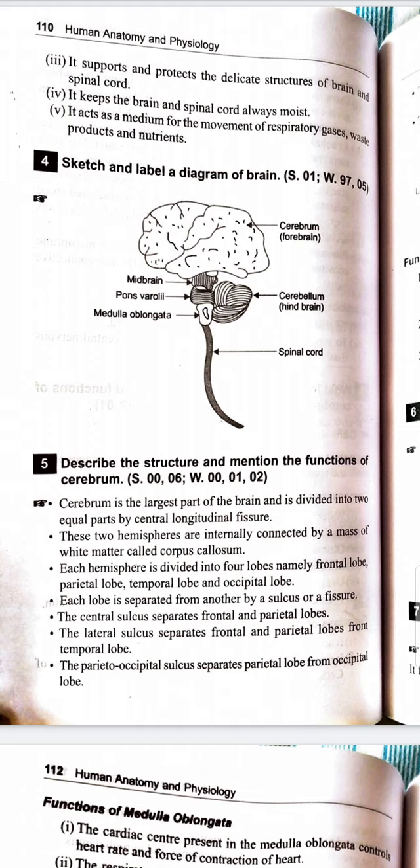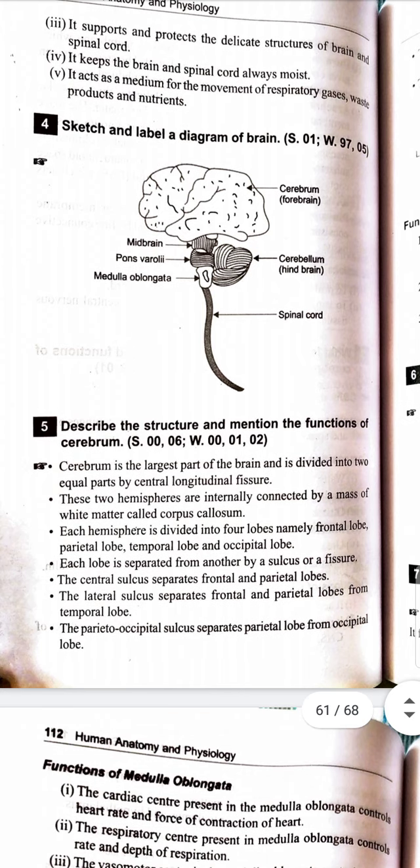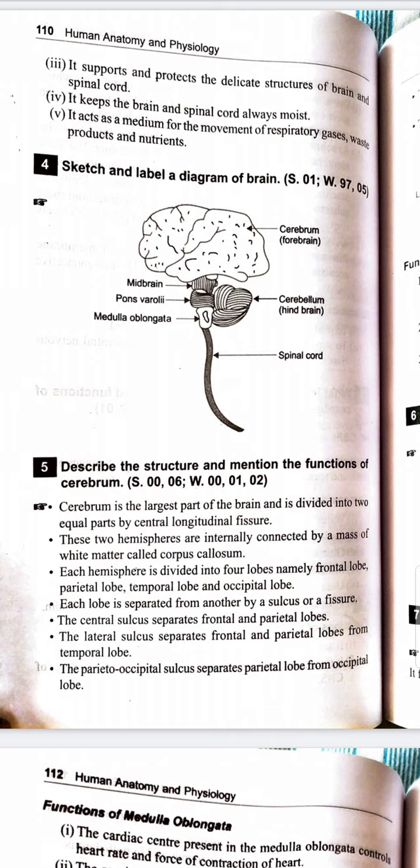The cerebrum is the large part of the brain. It is divided into two equal hemispheres. These two hemispheres are internally connected by a mass of white matter called the corpus callosum.